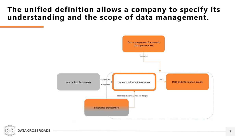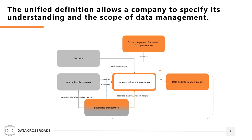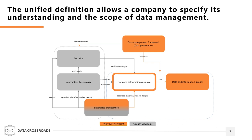The rest of data management components belong to the broad perspective and are colored gray. Information technology enables the life cycle of data and information resources. Enterprise architecture describes, classifies, models, and designs information technology. Security enables security of data and information resources, and enterprise architecture — especially the application and technology architecture — designs security. Data management framework coordinates activities between data management, IT, and the security function. In my experience, the majority of large international companies understand data management in a narrow scope. The most common sub-capabilities are data management framework, data quality, data modeling and architecture, and data assets management. These capabilities form the basis of the Orange Model of Data Management.